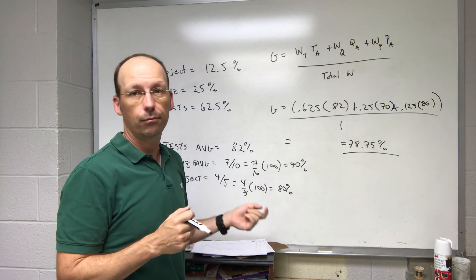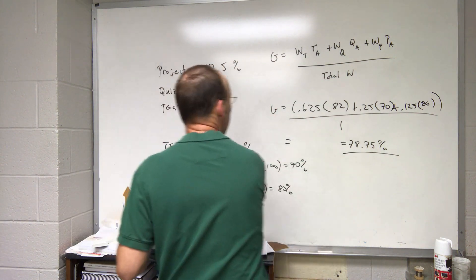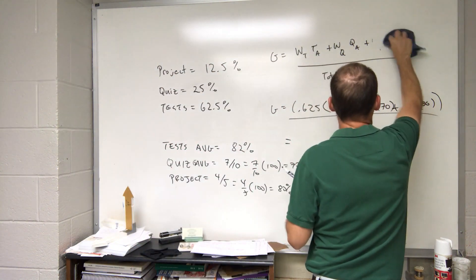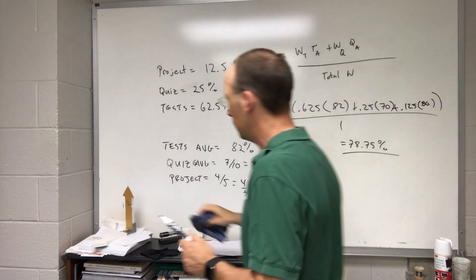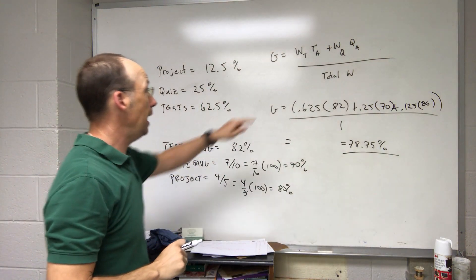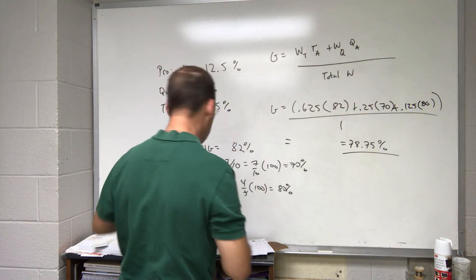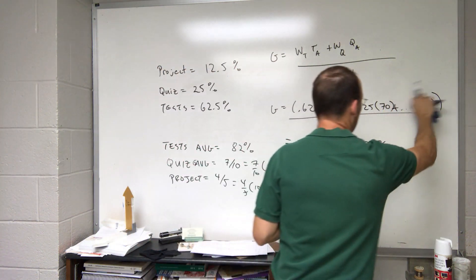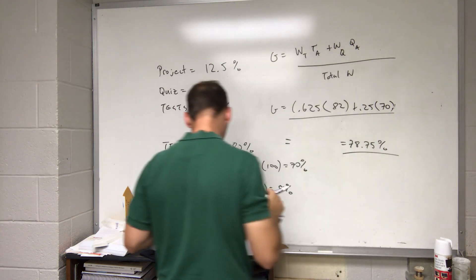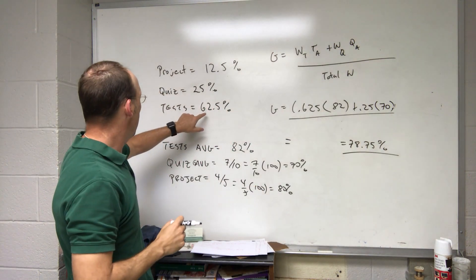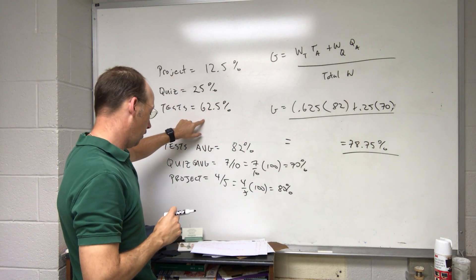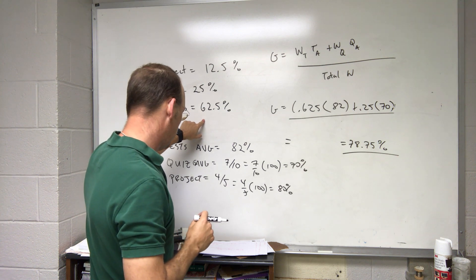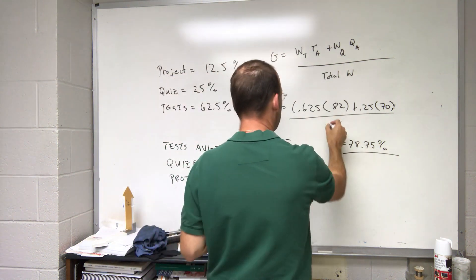Okay, let's just delete that. So what changes is now my total weight is not one. So my total weight, I'm going to get rid of that, I can get rid of that. Now my total weight is going to be just these two added together. So that's 87.5—is that right? Yeah, 0.875.